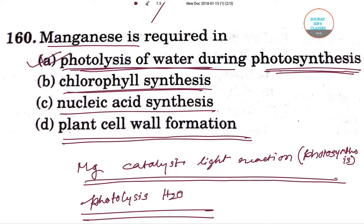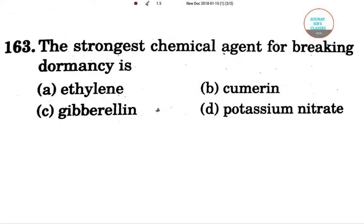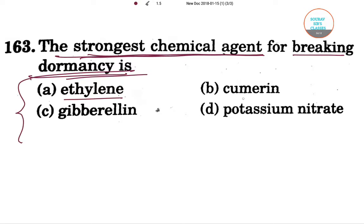In this video we have our next question. This question is about the strongest chemical agent for breaking dormancy. The options are: ethylene, coumarin, gibberellin, and option D is potassium nitrate.